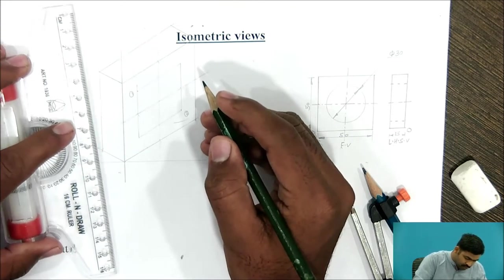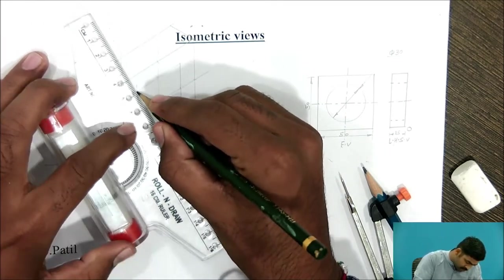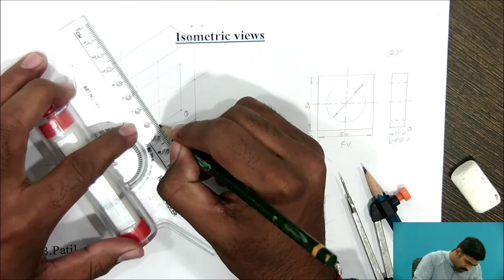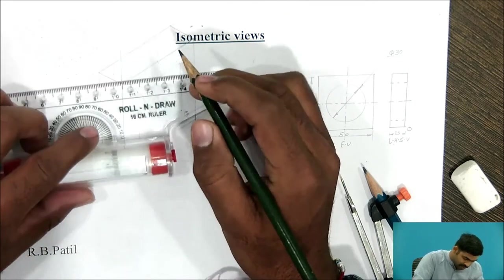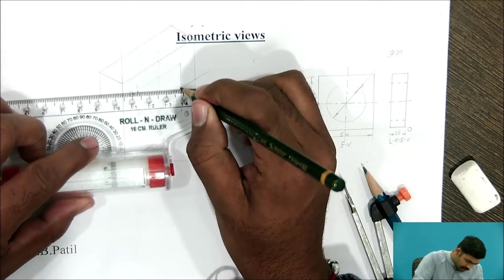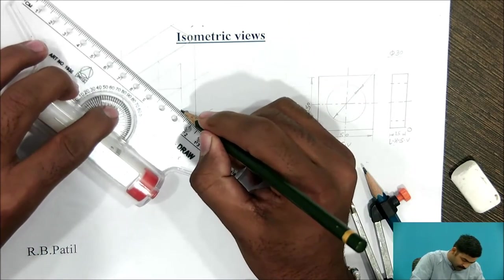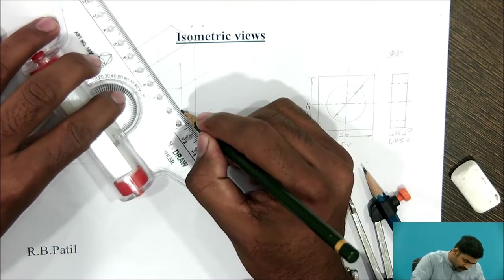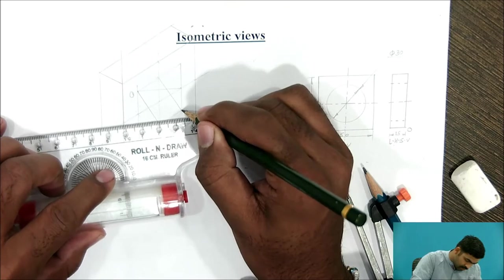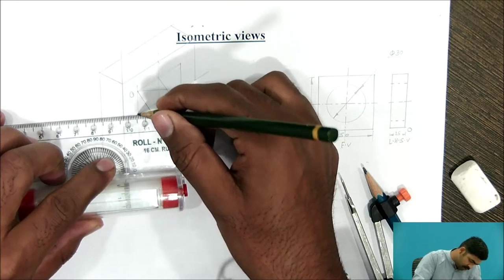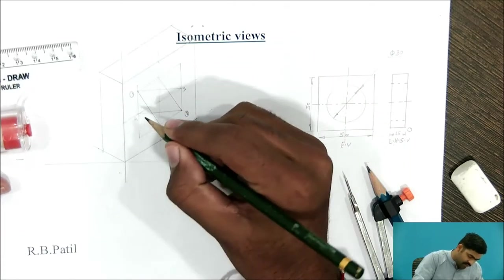For obtaining remaining two centres, from centre number first, join the centre. Again from centre number first, join the centre point. Here again, join the centre point. You will get centre number 3 and centre number 4.